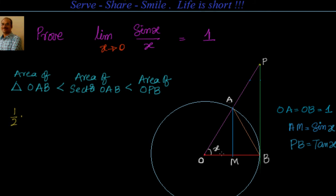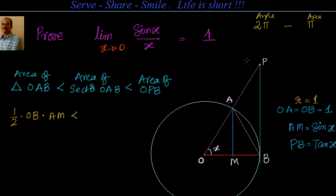Half into base, which is OB, into height, which is AM. That is less than area of sector OAB. For the sector: if the angle is 2π radians, the area of the circle is π r², and since r = 1, that is π. So by proportion, if angle is 2π and area is π, then for angle x the area is x by 2. So area of sector OAB equals x by 2.